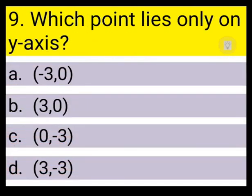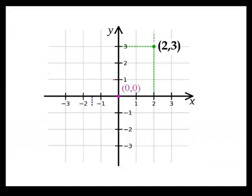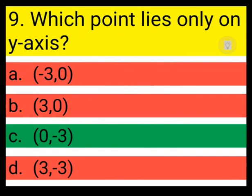Next question: which point lies only on the y-axis? Options: (-3, 0), (3, 0), (0, -3), or (3, -3). On the y-axis, the x-coordinate must be 0. Here (0, -3) has x = 0, so c is the correct answer.